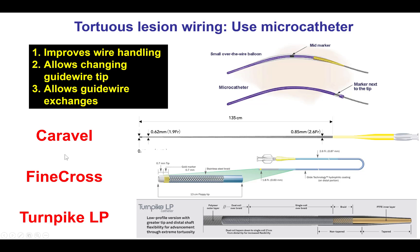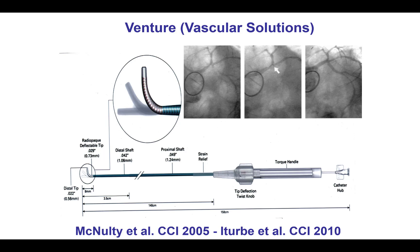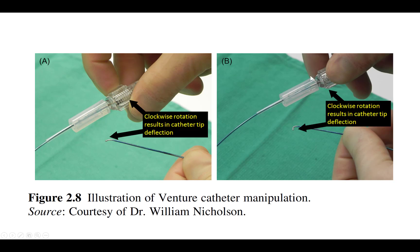Some of the most commonly used microcatheters are the Caravel, the FineCross, and the Turnpike LP — all low-profile microcatheters that navigate tortuosity well. The smaller the microcatheter, the less chance of pseudo-lesions, vessel straightening, and flow compromise. There are also specialized microcatheters for wiring through tortuosity, such as the Venture, which has a knob on the back end. Rotating the knob clockwise turns the tip up to 90 degrees, providing very good support for wiring through tortuous lesions.